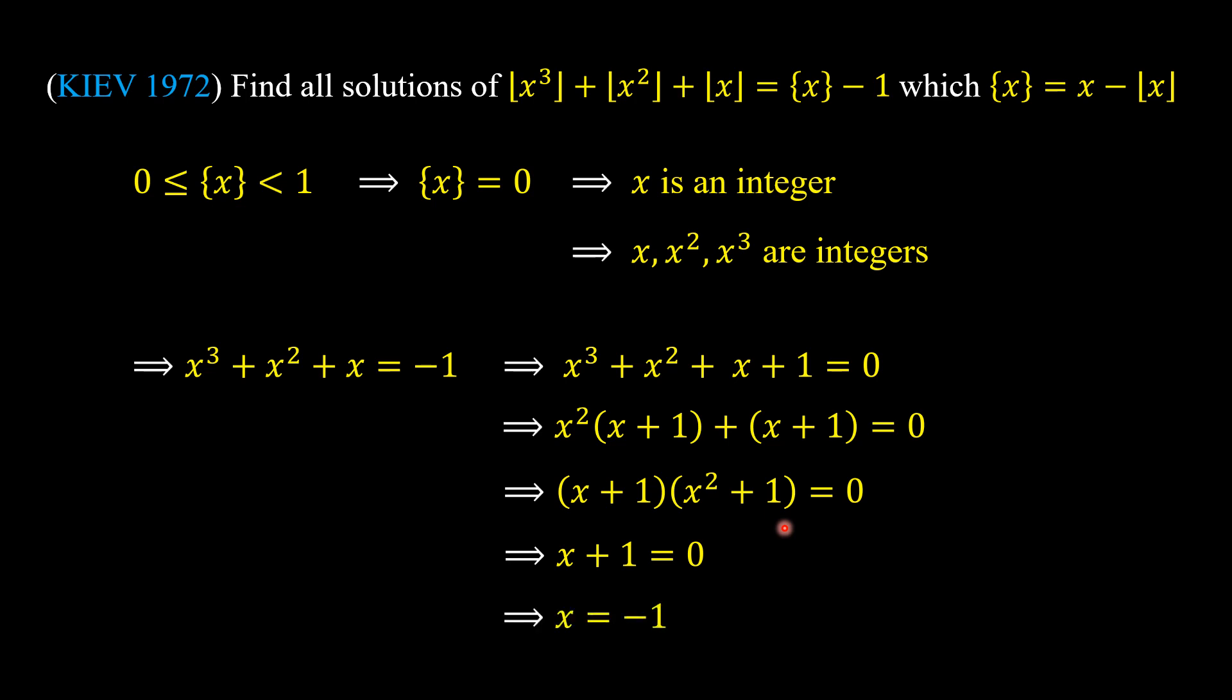So we have x = -1, and we can check that x = -1 satisfies the equation in the problem. So all the solutions of the problem is only x = -1, and there we are done.